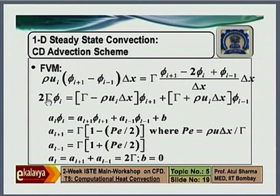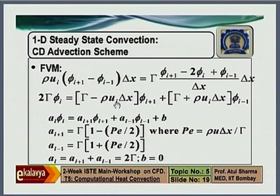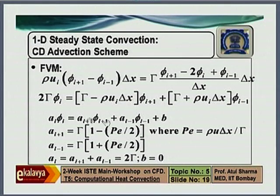That is correct. No, t should not be there. It is 1 minus Peclet number. Actually, I can understand that 2 gamma I had taken as coefficient a_i. So 2 gamma had already been taken as a_c here. I can understand what you are saying is that when you take gamma outside, it becomes 1 minus rho u delta x divided by gamma. So there should be no 2 term here. That is what you are saying, correct? Yes, you are right — there is a mistake here.